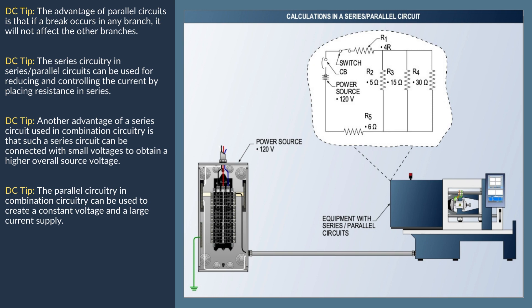The voltage drop across each resistance can be determined by applying Ohm's law: E (voltage) equals I multiplied by R (resistance). The parallel resistances must be treated as a single resistance in series with the other two. To find the voltage drop across R1, RTP, and R5: E1 = 9A × 4Ω = 36V; ETP = 9A × 3.33Ω = 29.9V; E5 = 9A × 6Ω = 54V. Therefore, total voltage equals 119.9V, rounded up to 120 volts.